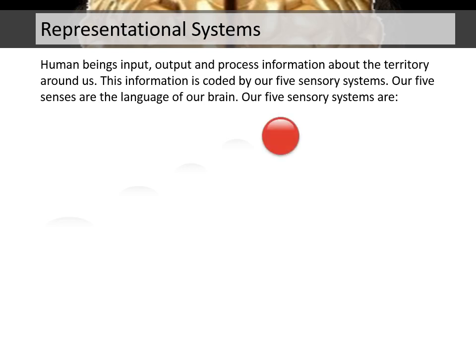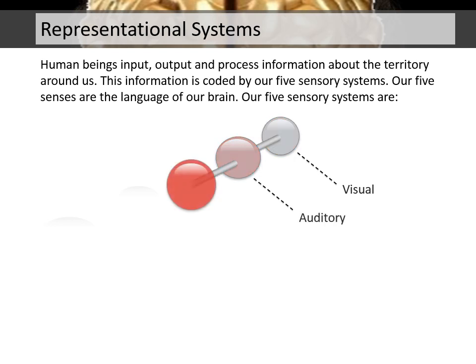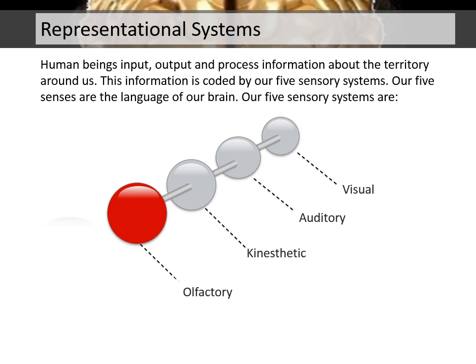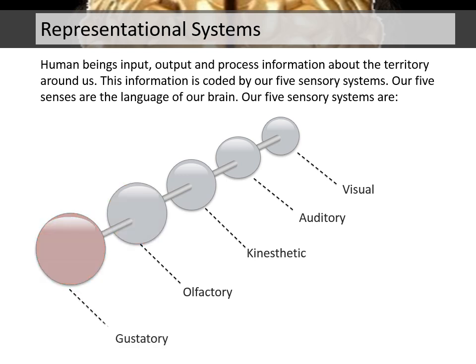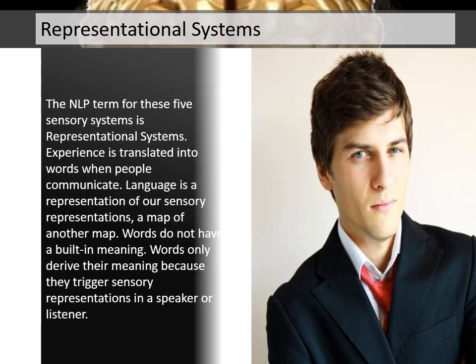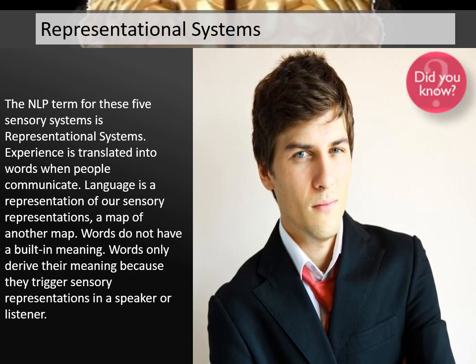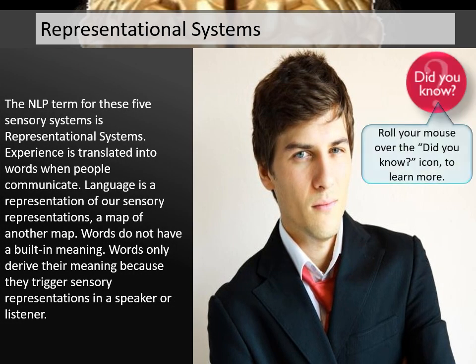Our five sensory systems are: Visual, Auditory, Kinesthetic, Olfactory, and Gustatory. The NLP term for these five sensory systems is representational systems.